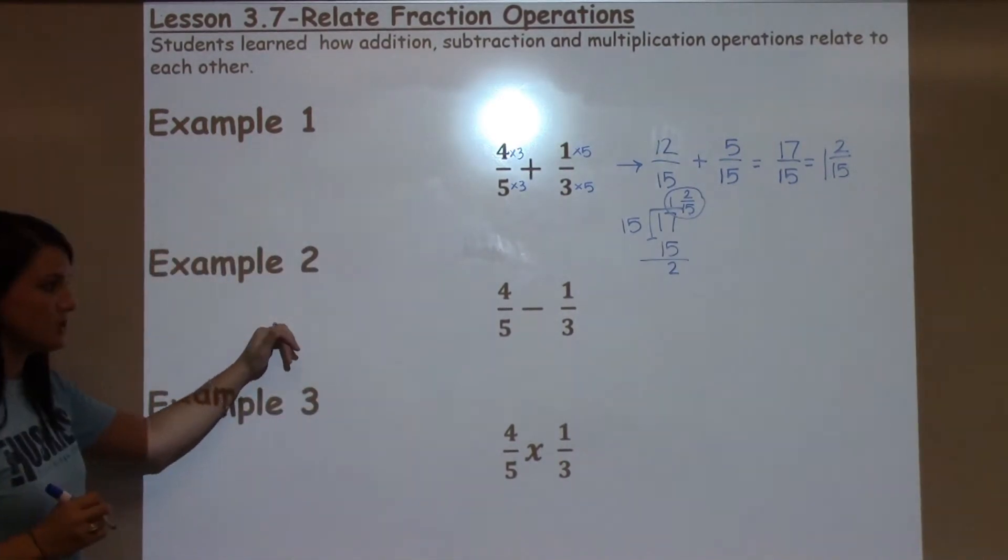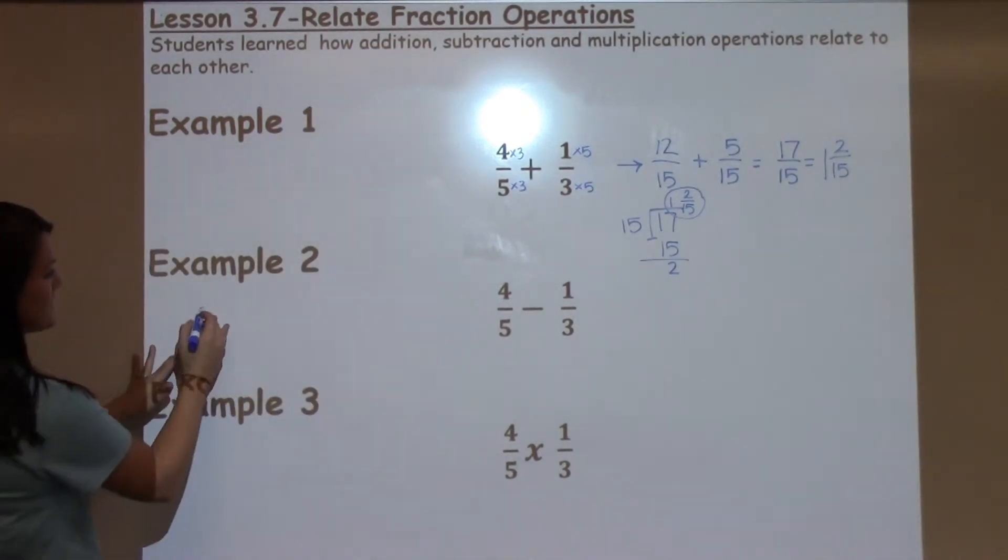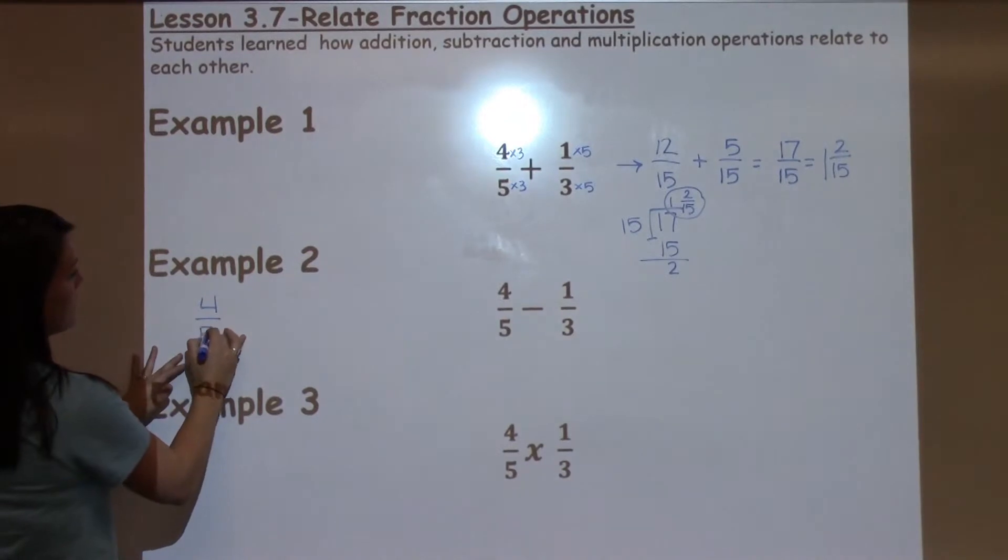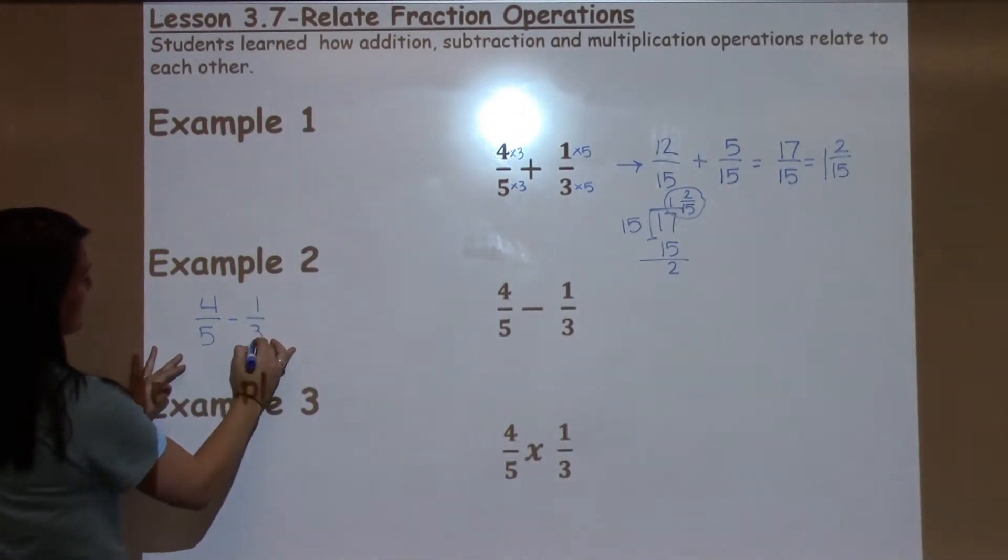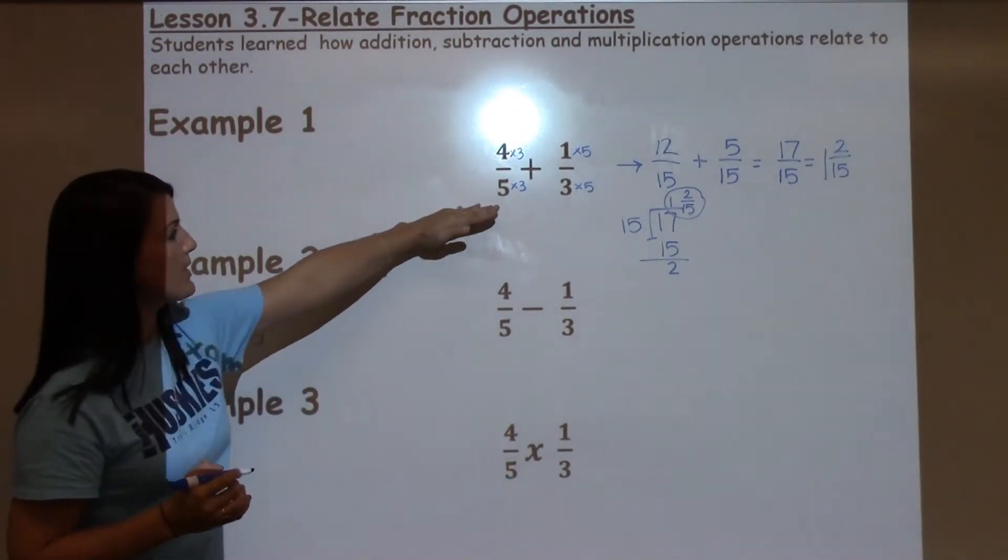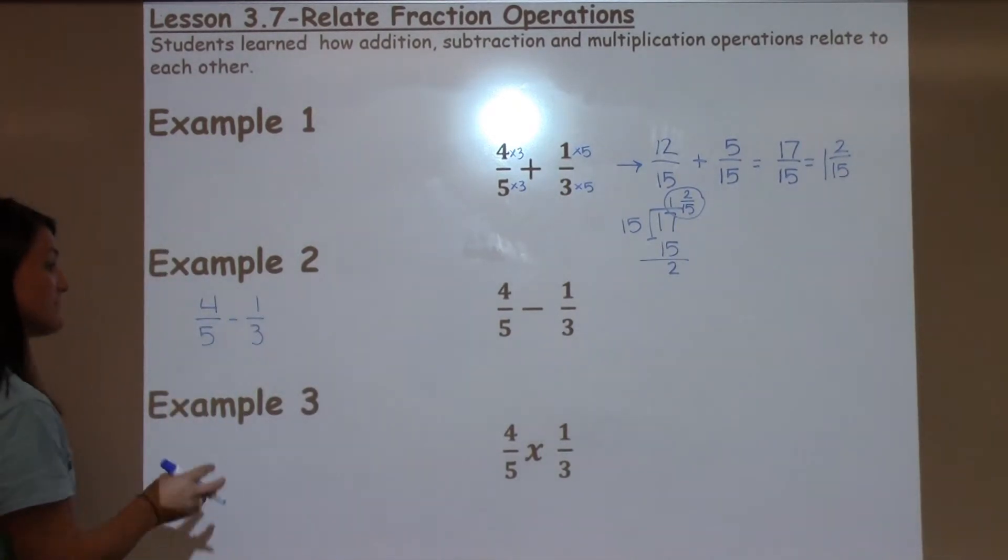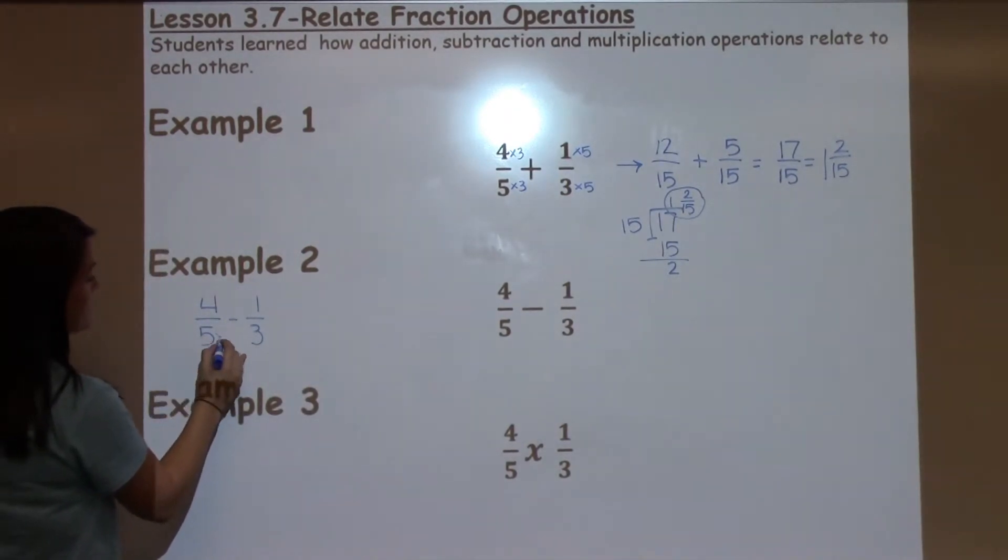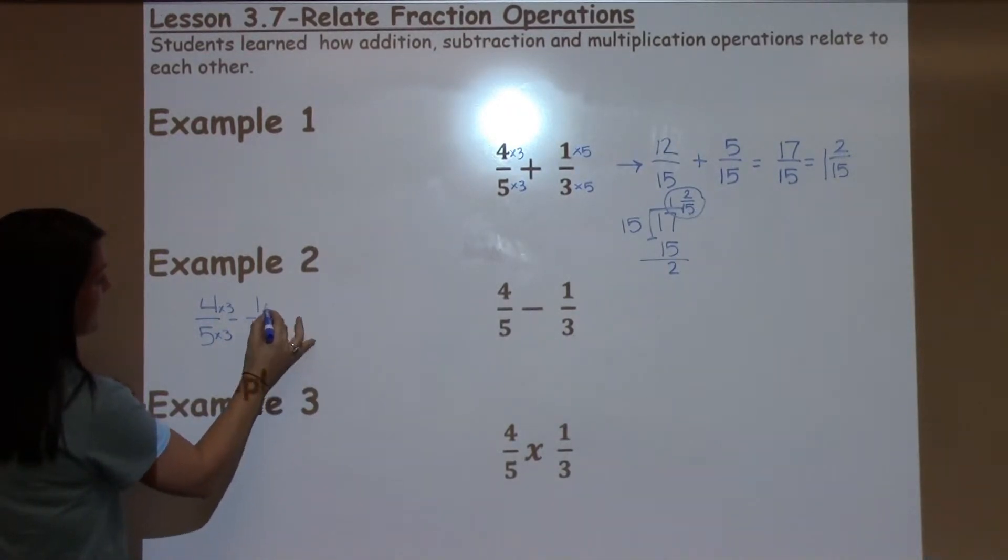So now we're going to move to example 2. 4 5ths minus 1 3rd. Again, I want the denominators to be the same when I subtract. So I'm just going to follow that same process, multiplying by the opposite denominator.